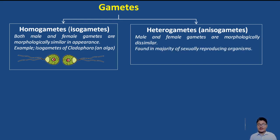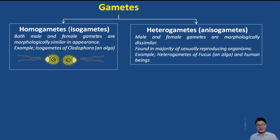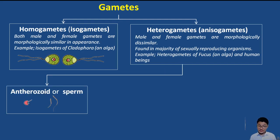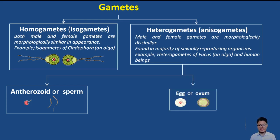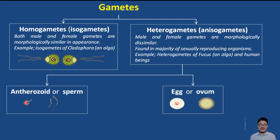For example, humans have heterogametes. Most sexually reproducing organisms produce heterogametes. Examples given include heterogametes of Fucus (an alga) and human beings. Human beings produce sperm; in the case of Fucus, the male gamete is sometimes called antherozoids. Female gametes are usually called ovum or egg. So technically we call antherozoids or sperm for male gametes, and egg or ovum for female gametes.